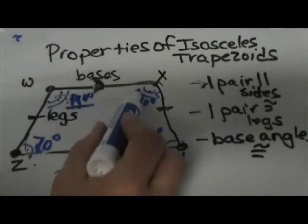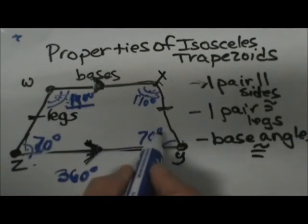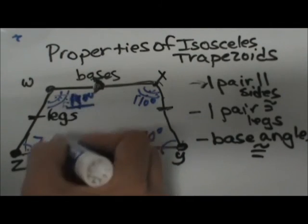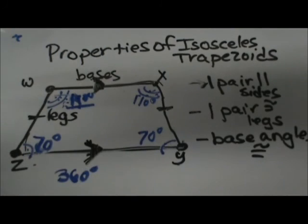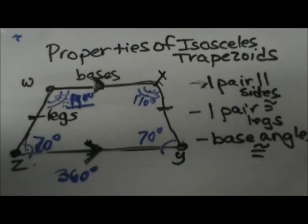So the two pairs of base angles are congruent to each other, and the consecutive angles are supplementary. I hope this video was helpful in learning about the properties of isosceles trapezoids.